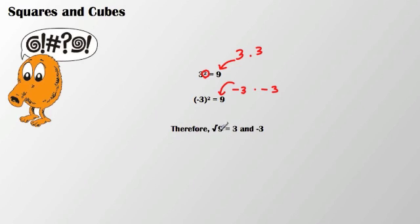Therefore, if we take the square root of 9, we will get 3 and negative 3. Remember that a square root could potentially have both a positive and a negative answer.